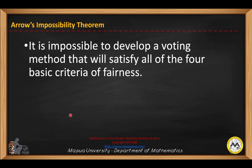According to Arrow's impossibility theorem, it is impossible to develop a voting method that will satisfy all four basic criteria of fairness.